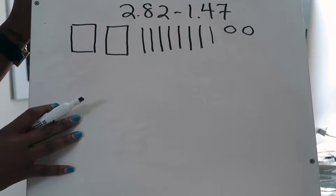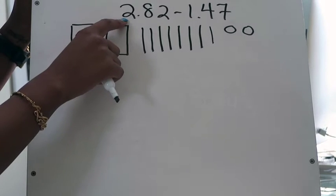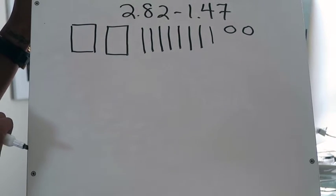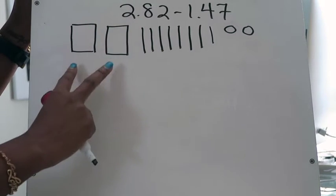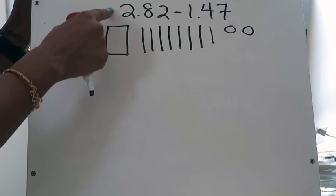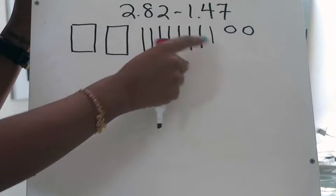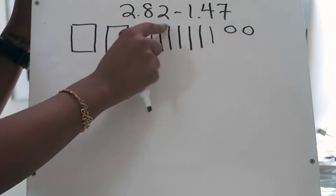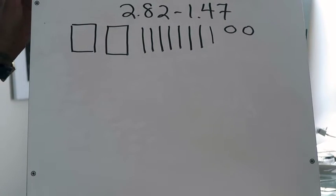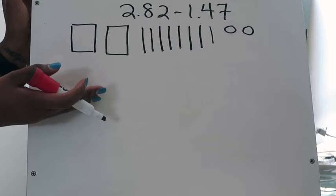Here's our first example. I have modeled the decimal two and eighty-two hundredths. I have drawn two wholes to represent the two in the ones place, eight tenths to represent the eight in the tenths place, and two hundredths to represent the two in the hundredths place. The first thing you want to do is model the number that is being subtracted from.